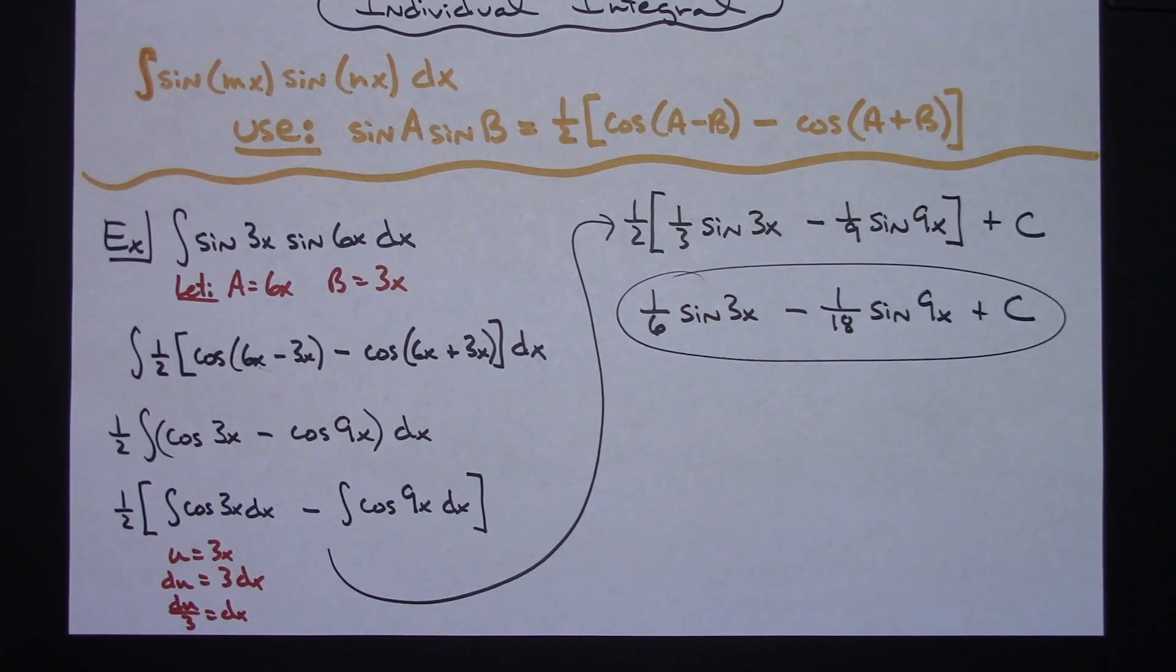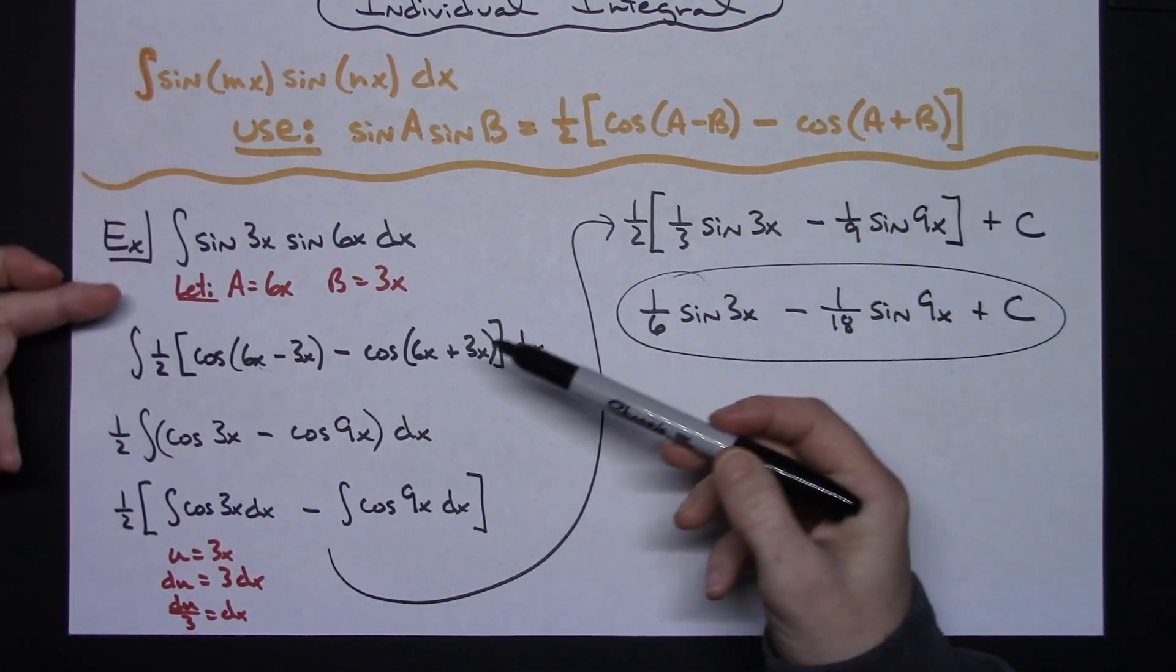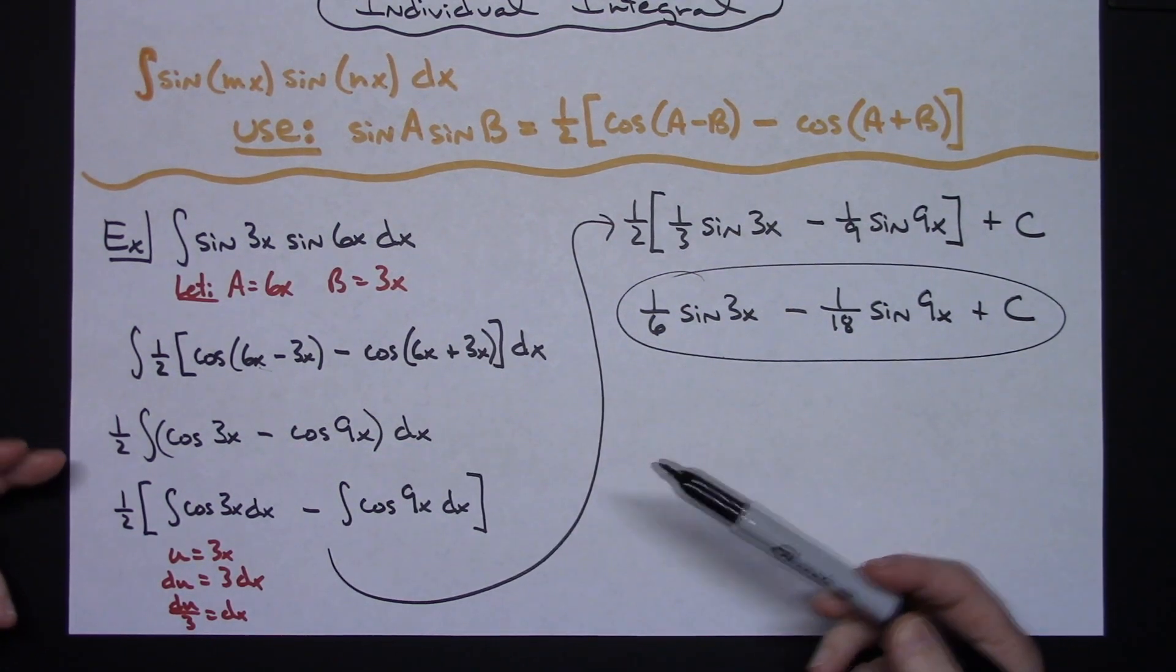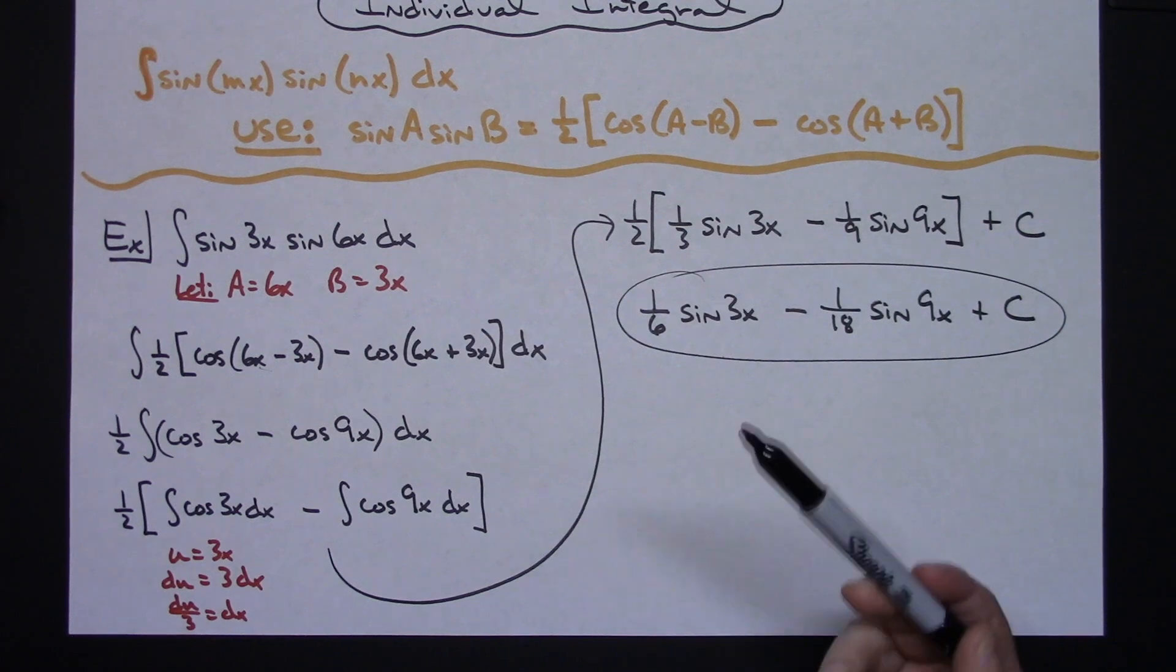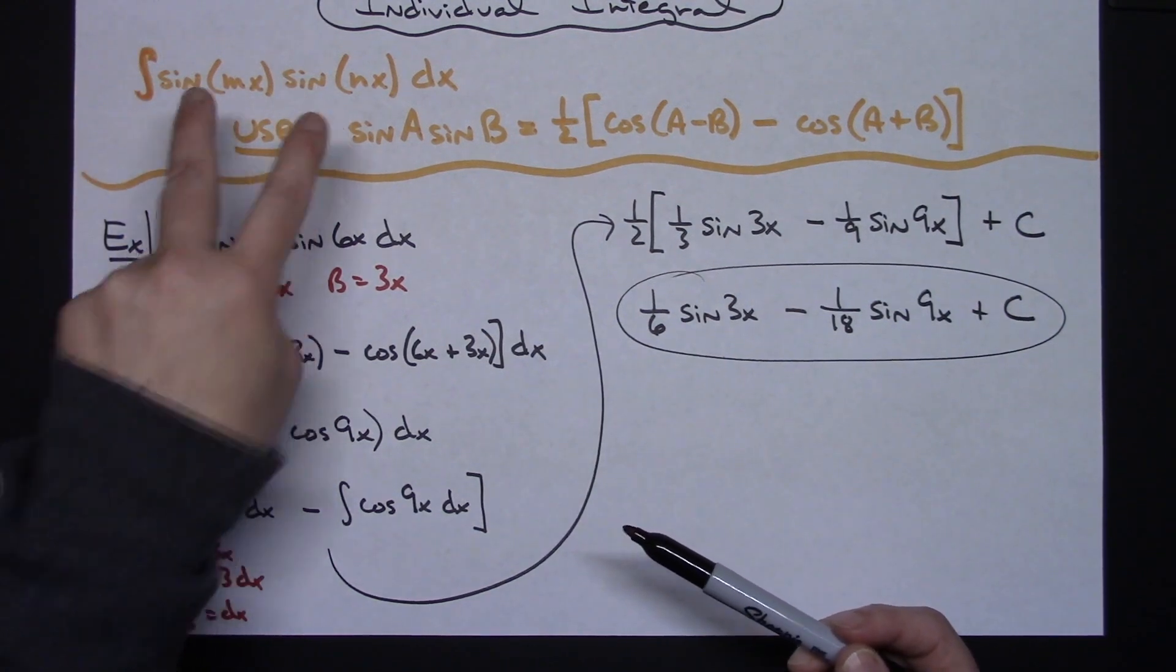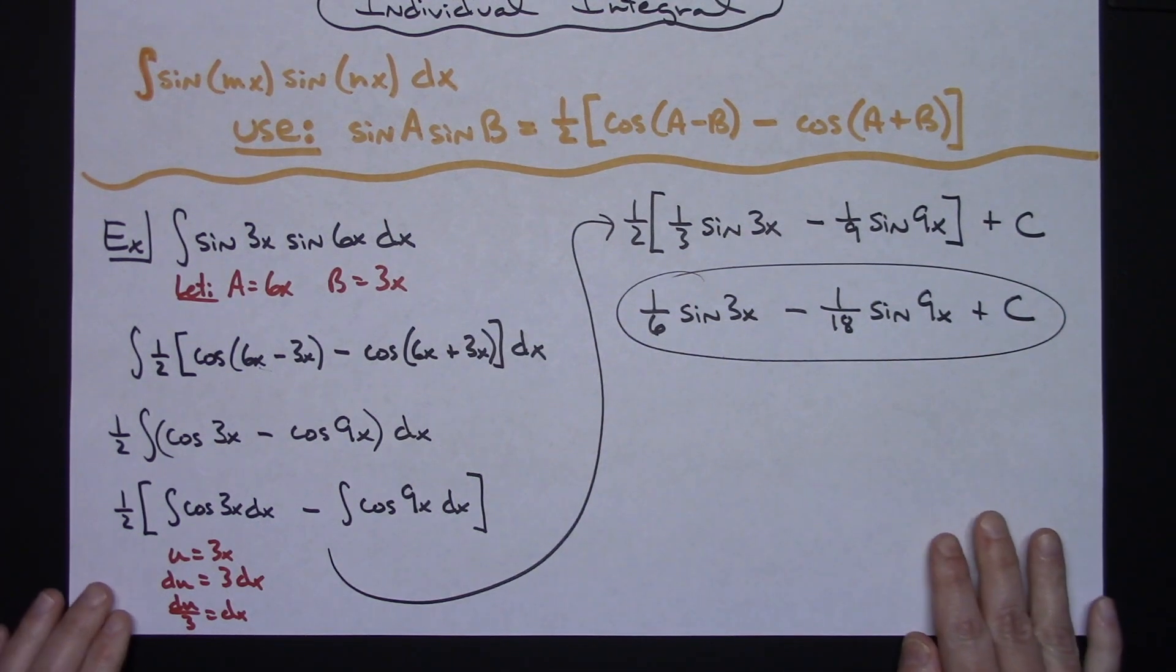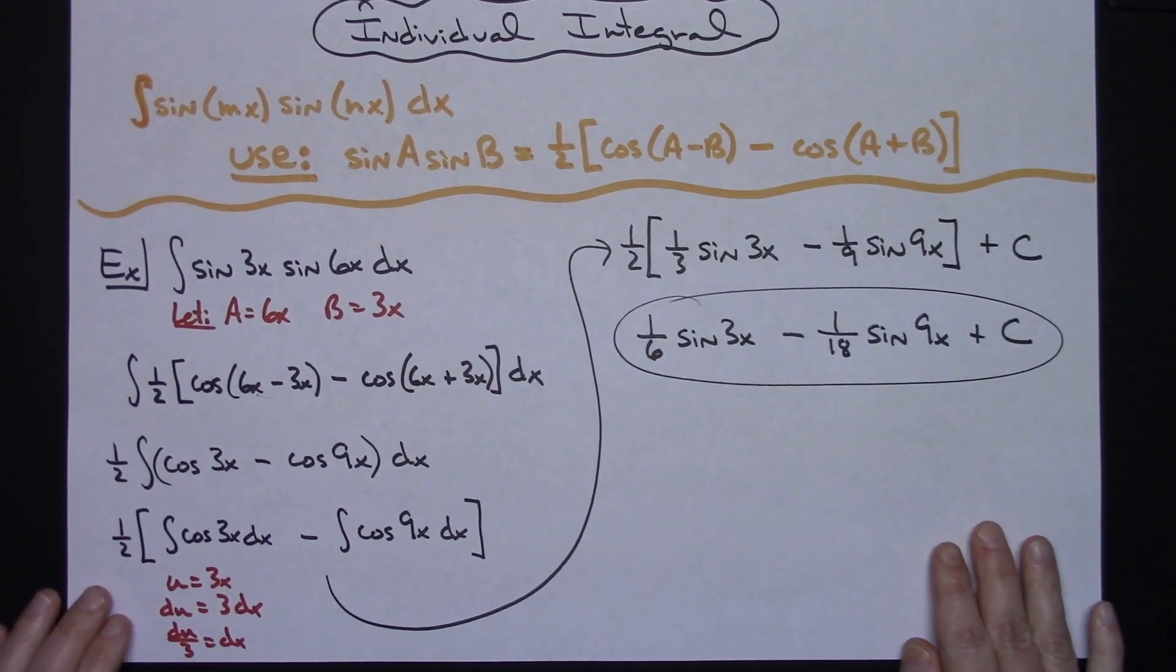So after that initial trig substitution right there, then it pretty much turns out to be a straightforward integration. I would recommend that this is probably one of the easiest ways to do it. You really don't want to attempt probably that integration by parts, because I think this is just an easier approach. Thanks for watching, and if the videos are helping, don't forget to share with your friends, and also subscribe to the channel.